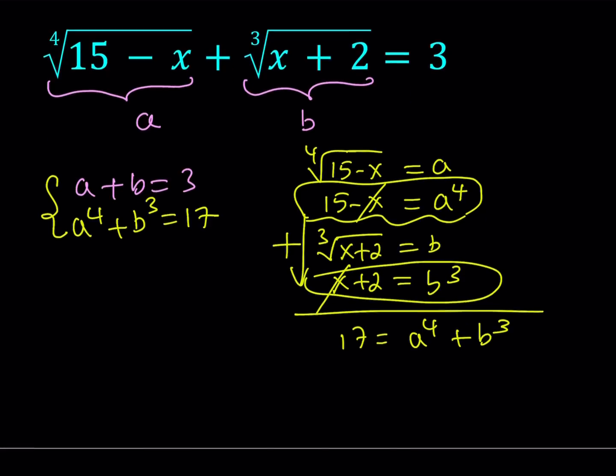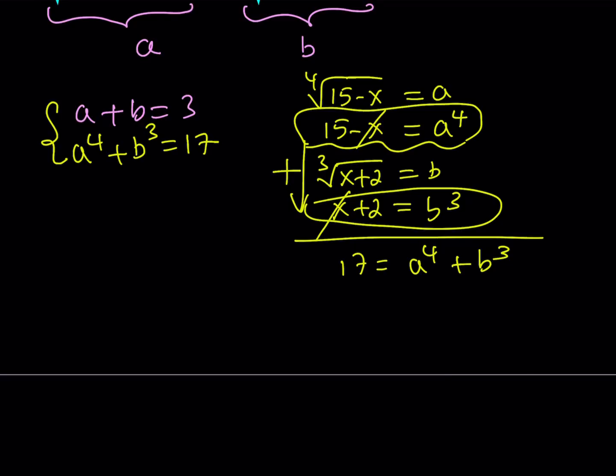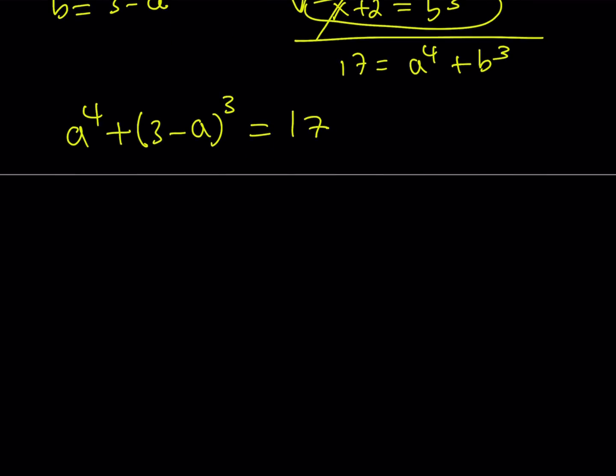So let's go ahead and use substitution here since elimination is not possible. Let's go ahead and isolate b here. If we do we get b equals 3 minus a. And then let's go ahead and substitute that in the second equation. And that gives us a to the 4th power plus the quantity 3 minus a to the 3rd power equals 17. So this is the equation we're going to solve. It's again in a single variable. But it's a quartic equation as opposed to a radical equation. So it's a polynomial equation and we should be able to solve it.